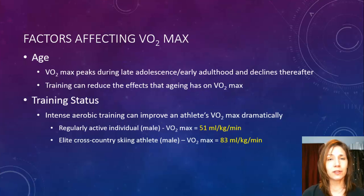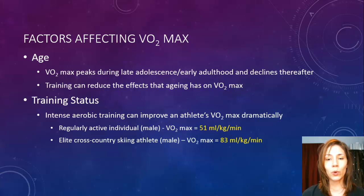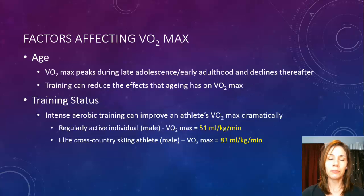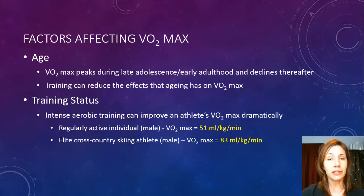Age is also a factor. VO2max actually peaks during late adolescence or early adulthood — around 20 — and then it starts to decline. So once athletes get into their 30s they're going to struggle in endurance events compared to those in their 20s. To combat that, older athletes will have to train harder, but training can still offset the decline — even when competing against younger people.